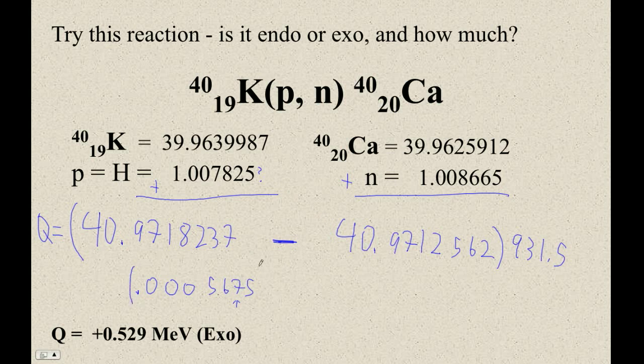So then I'm going to multiply that by 931.5. Times 931.5, and I get positive, I'm going to round this to 3 sig figs, positive 0.529 MeV.